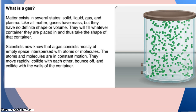Scientists now know that a gas consists mostly of empty space interspersed with atoms and molecules — in other words, the molecules are far apart. The atoms and molecules are in constant motion, as in all phases of matter, but they move rapidly, collide with each other, bounce off, and collide with the walls of the container. So it's a crazy party.